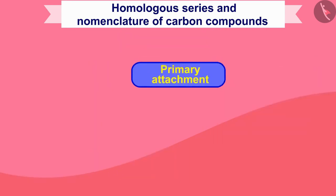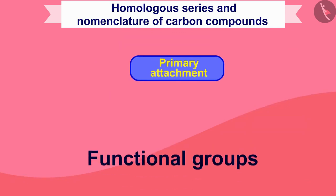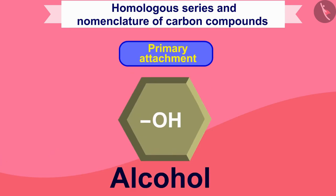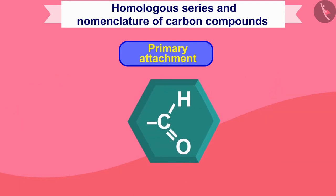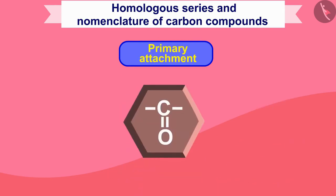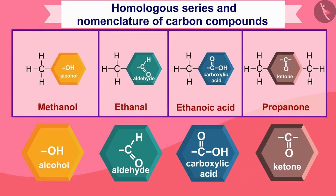Now check the primary attachments — the functional groups. They are as important as a surname in the carbon compound name. If -OH (hydroxyl) is seen, it is alcohol, and you write '-ol'. If -CHO is seen, that is aldehyde, and you write '-al'. If -COOH is seen, this is carboxylic acid, and you write '-oic acid'. If C=O is seen, this is ketone, and you write '-one'. Once you have understood these, you can write the name of any carbon compound.